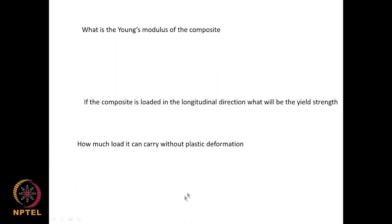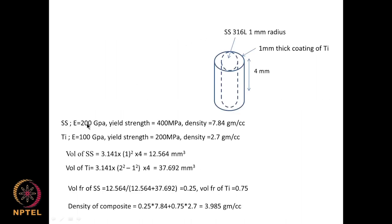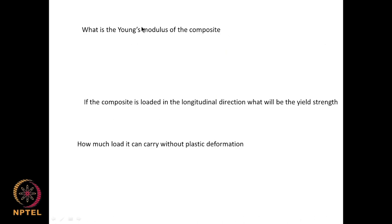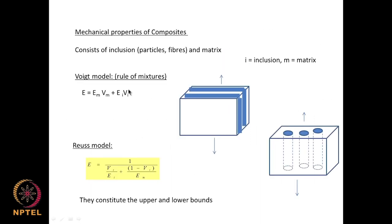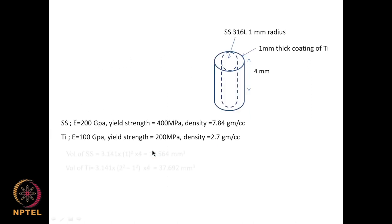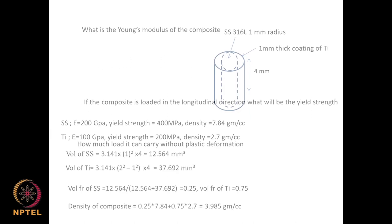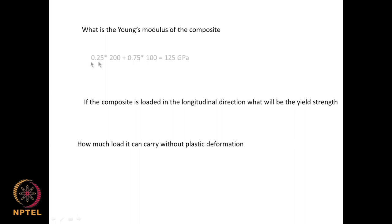What is the Young's modulus of the composite? Using the Voigt model: E = E_SS × V_SS + E_Ti × V_Ti = 0.25 × 200 + 0.75 × 100 = 50 + 75 = 125 GPa. So the Young's modulus of the composite is 125 gigapascal.